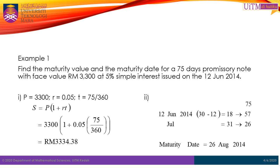We want to find the maturity value. In other words, we are trying to find the value of S. We then substitute these values in the simple amount formula: S equals P multiplied by 1 plus r times t. By solving this formula, we have the maturity value to be RM 3334.38.